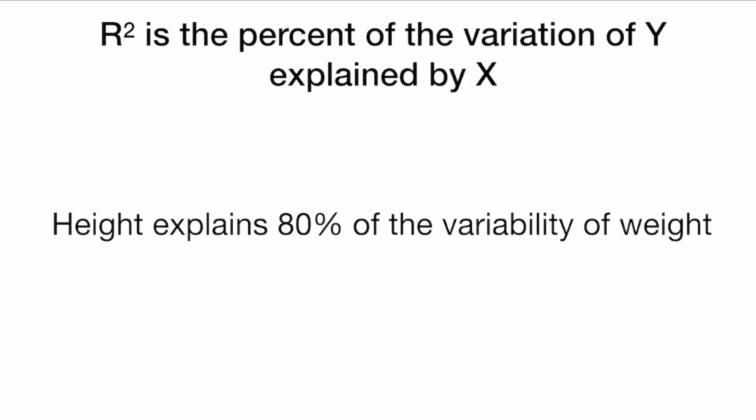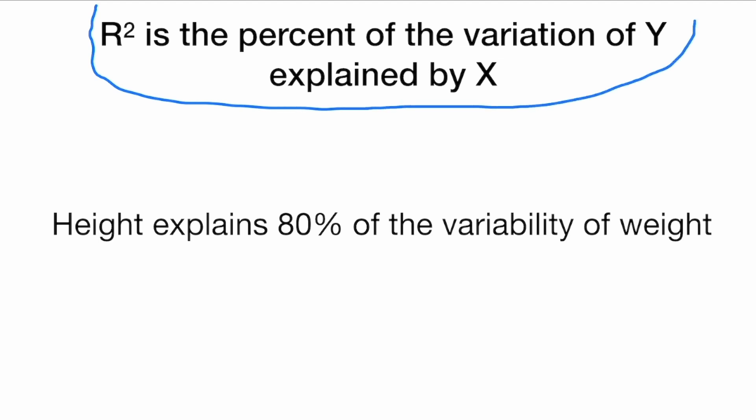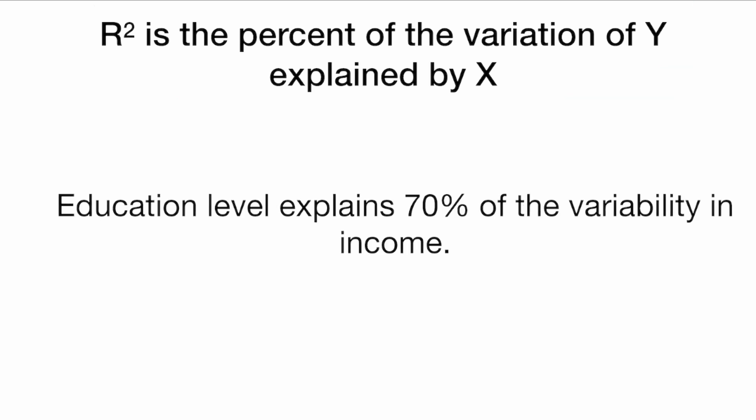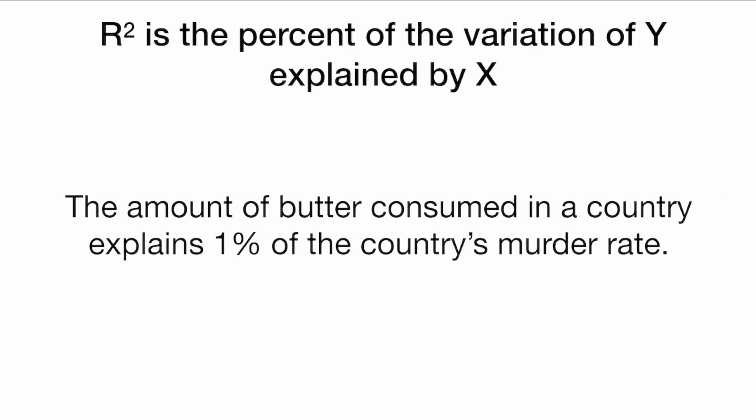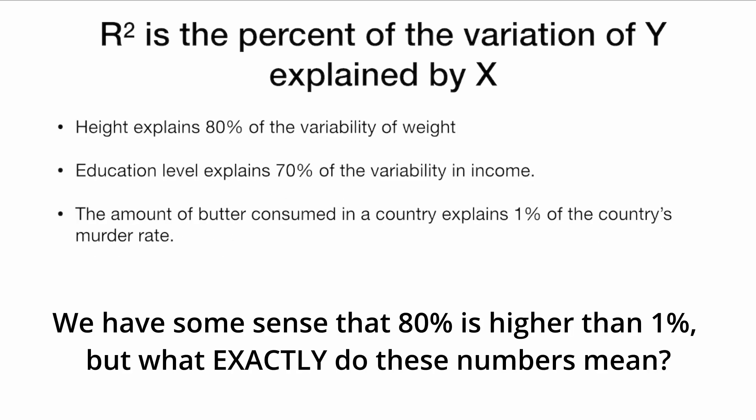Let's learn about R-squared. When we hear about R-squared, we usually see a sentence like 'R-squared is the percent of variation of Y explained by X.' For instance, height explains 80% of the variability of weight, education level explains 70% of the variability in income, or the amount of butter consumed in a country explains 1% of that country's murder rate. We have some sense that 80% is higher than 1%, but what exactly do these numbers mean?